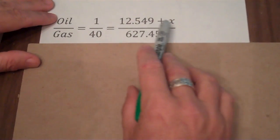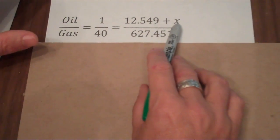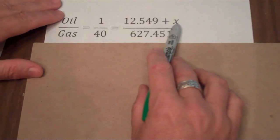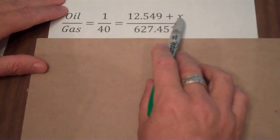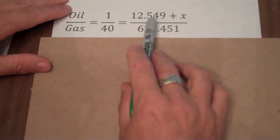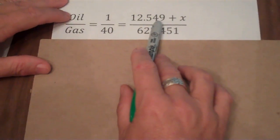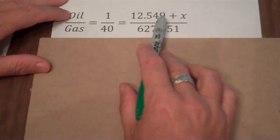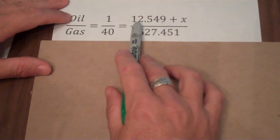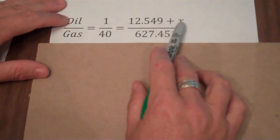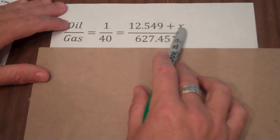I desired to do that because x is my unknown and it's always easier to do the calculations if your unknown is on top. Now we knew that there was 12.549 fluid ounces of oil. I'm going to add some more oil. I don't know how much.